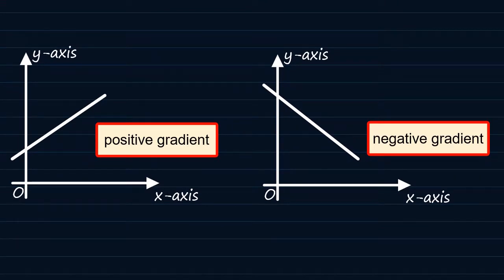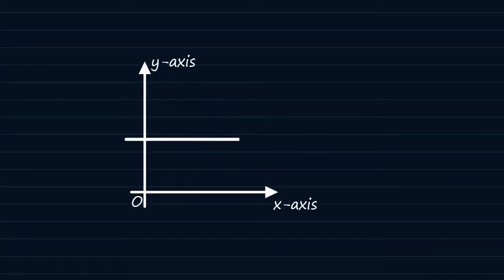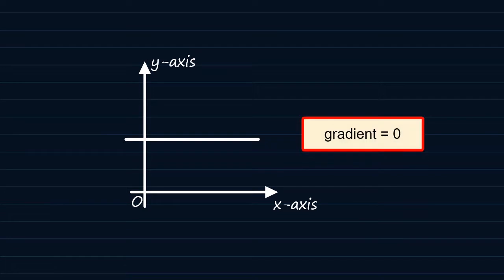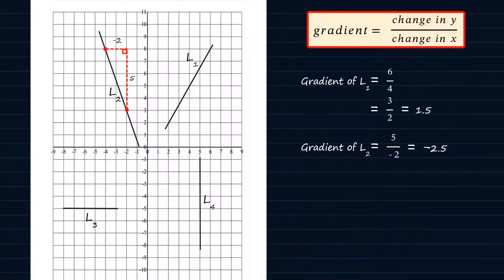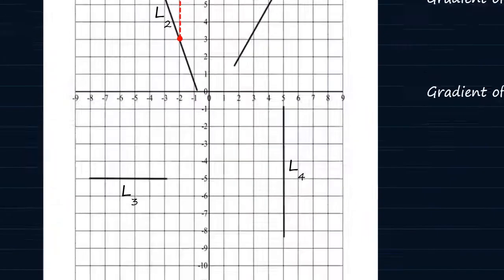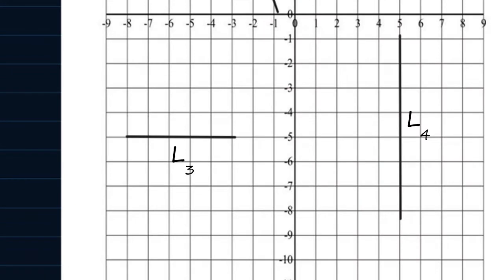It is also important for you to know that a horizontal line has zero gradient. Therefore, if I take you back to the grid paper, the gradient of the line L3 must simply be zero.